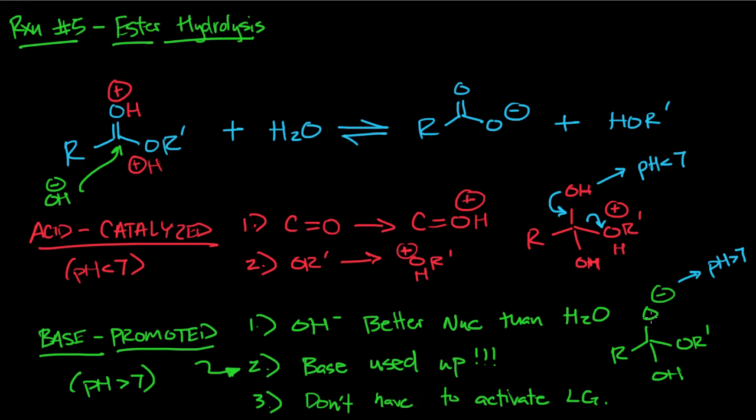Because this negative oxygen is strong enough to kick out the OR unactivated. With the acid one we had to activate the OR group because the OH is not strong enough to kick it out. But with base-promoted ester hydrolysis, the negative oxygen is strong enough to kick out the OR.